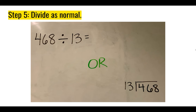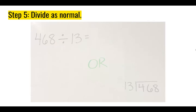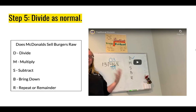Now all we have to do is divide as normal. Some people may prefer to keep it written as 468 divided by 13, or you might decide to write it using the box method. Decide how you want to rewrite your problem, because when you're moving decimal points things can get confusing. I like to use the strategy 'Does McDonald's Sell Burgers Raw,' which stands for Divide, Multiply, Subtract, Bring Down, Repeat or Remainder. In this video I'll walk you through solving 468 divided by 13.